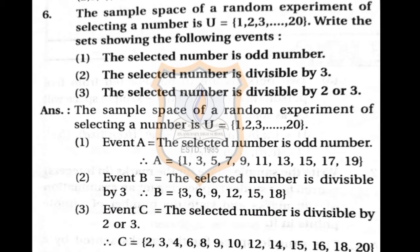Question 6: The sample space is selecting a number from 1 to 20. First event: the selected number is odd. From 1 to 20, the odd numbers are 1, 3, 5, 7, 9, 11, 13, 15, 17, and 19. So this is Event A.